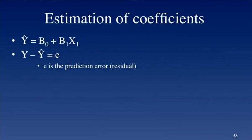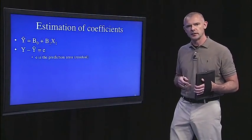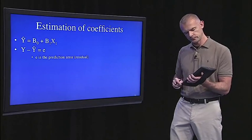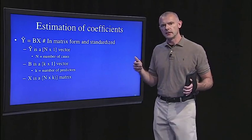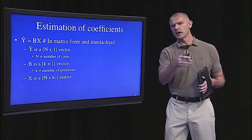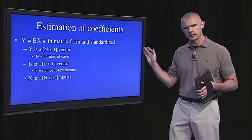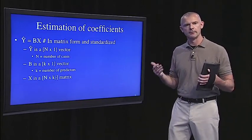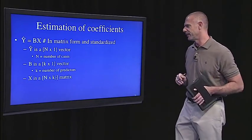Here's the simple regression equation. We get our predicted score on Y; it's a function of the regression constant plus some predictor times its slope. And the difference is the prediction error or residual. Now let's put that in matrix form. I standardized everything just to make this a little easier on us. So the regression constant goes away; we can assume that's zero. But now think of all of these Y, B and X as matrices.